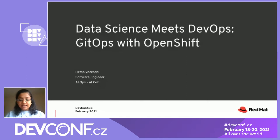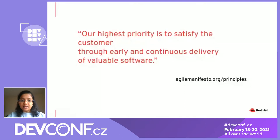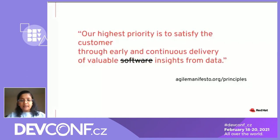So what exactly is DevOps? DevOps is part of the Agile manifesto, and one of the principles which I believe is highly relevant is stated as: our highest priority is to satisfy the customer through early and continuous delivery of valuable software. Now, in the case of machine learning examples, it would basically be continuous delivery of valuable insights from data. So how exactly is this different from your traditional DevOps approach?